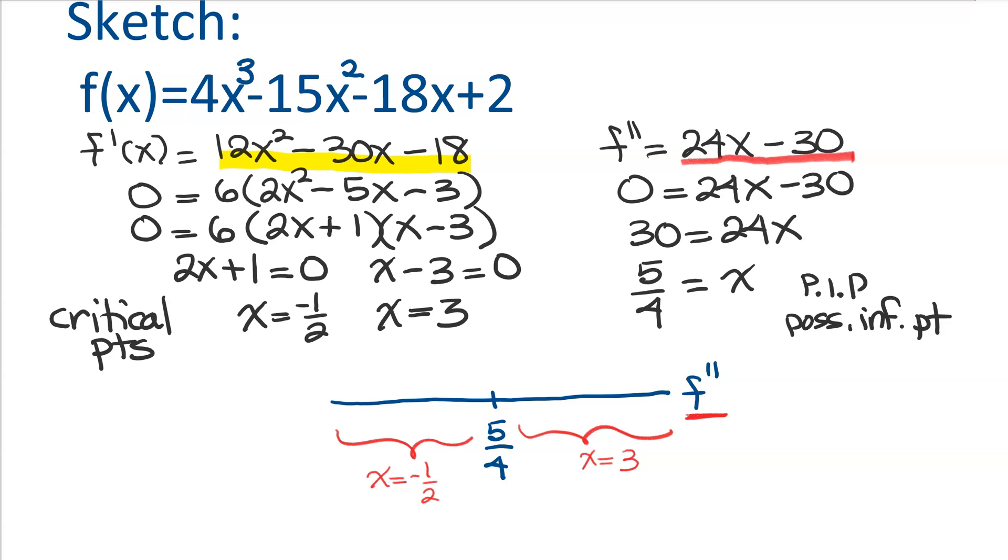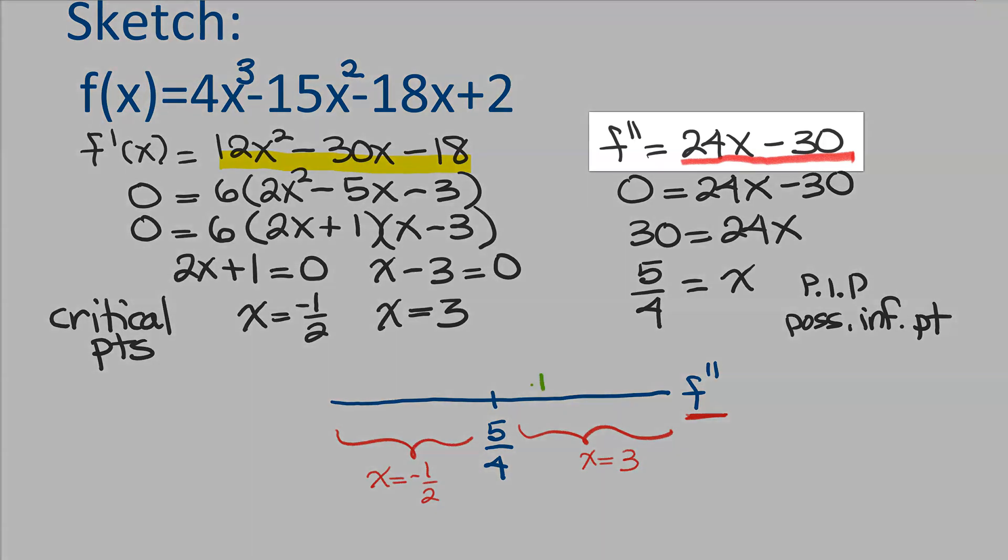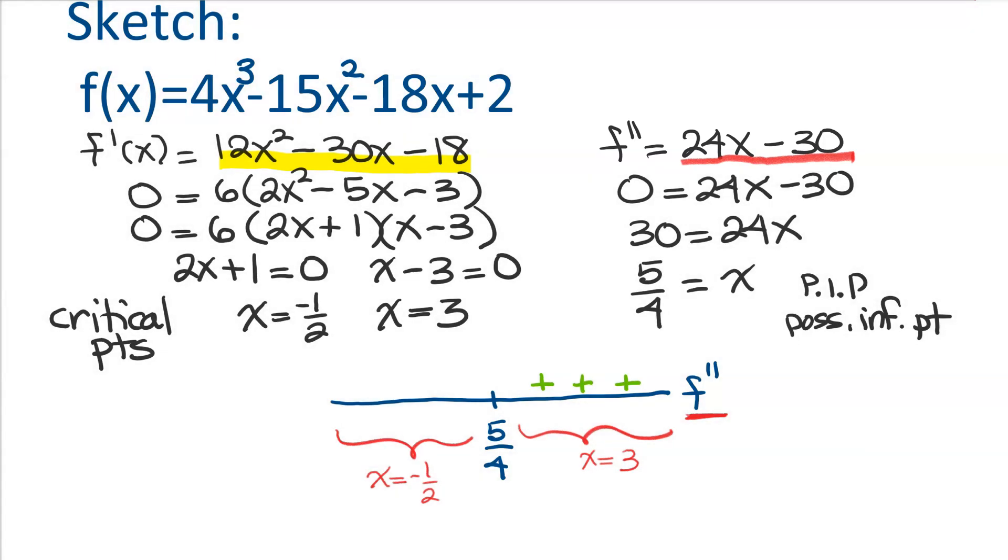So when I do that, and again, you may want to pause so that you can kind of do this yourself, use your calculator, plug them in. When you plug 3 into your second derivative, you end up getting a positive value. And so what that means for your second derivative, when that is positive, that means you're happy that you are concave up.